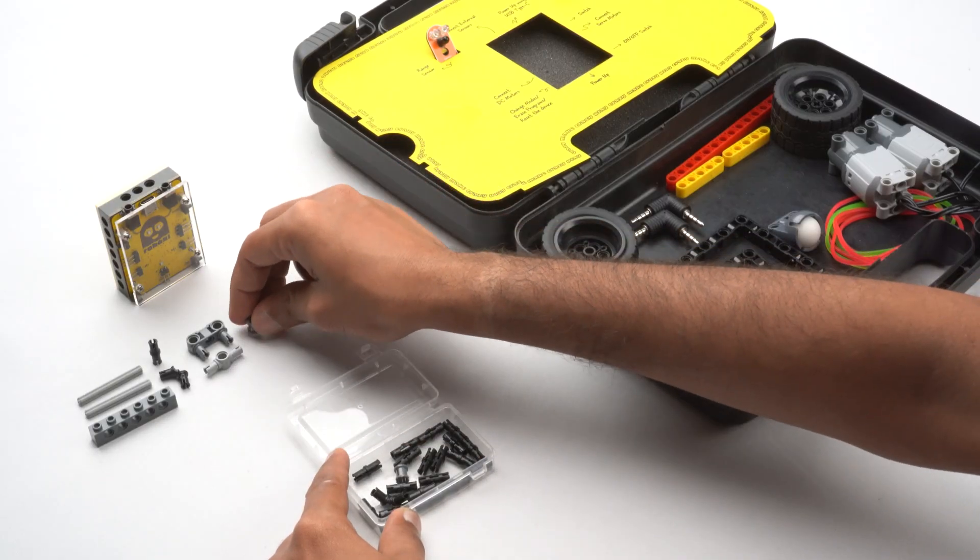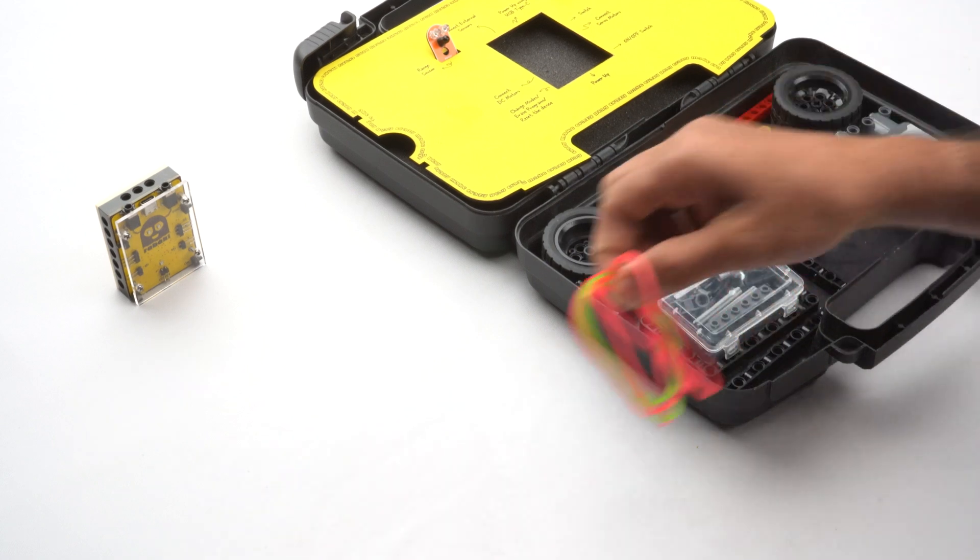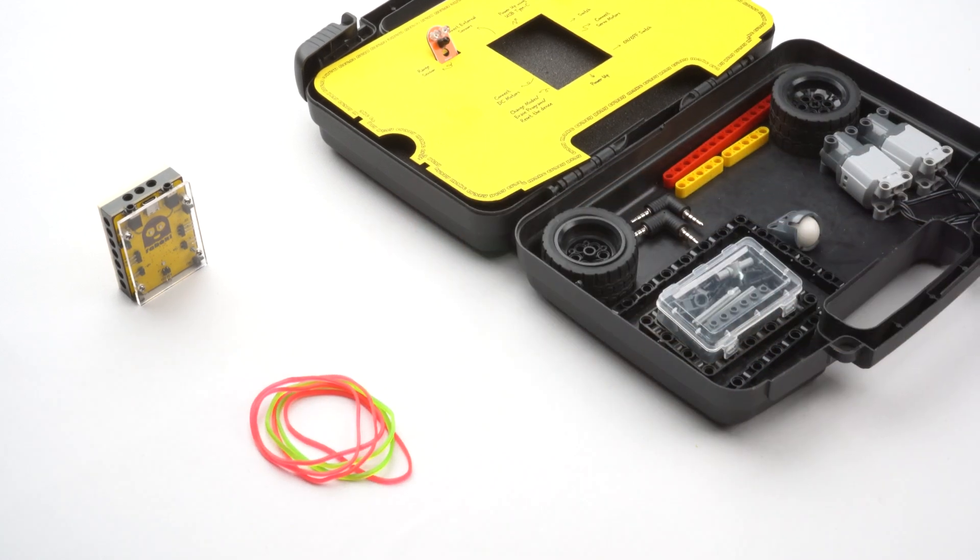Next, to stabilize the model, we also have two full bushes. Finally, we have these rubber bands to add additional functionality to our models.